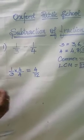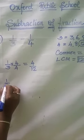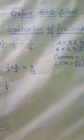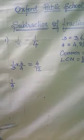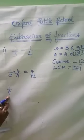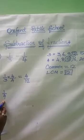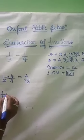4 by 12. And what is the next fraction? 1 by 4. The same way 1 by 4 also we have to have our denominator 12. So in order to have our denominator 12, we have 4 here. With 4, what number do I have to multiply in order to get 12? 3.